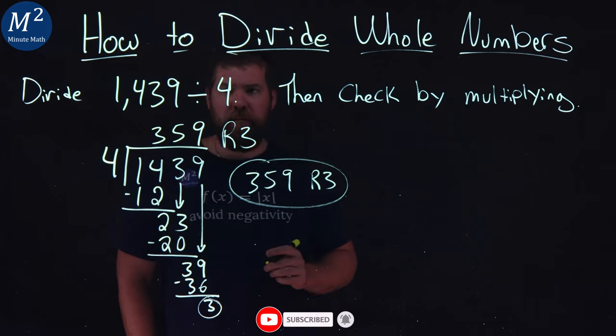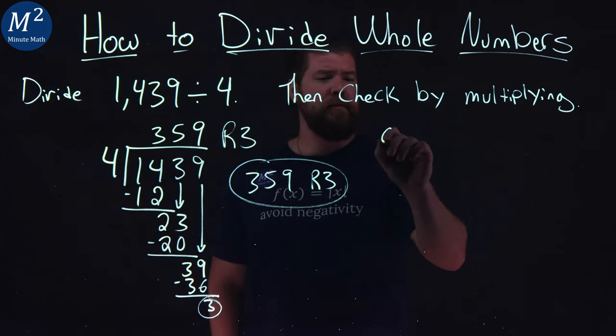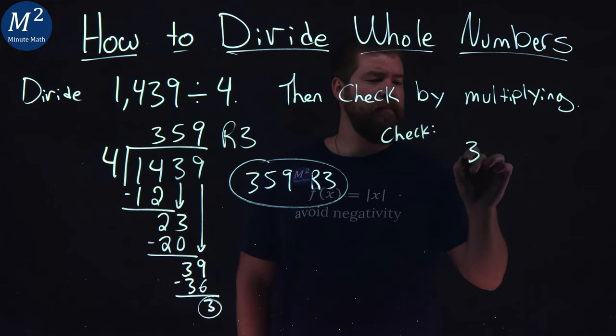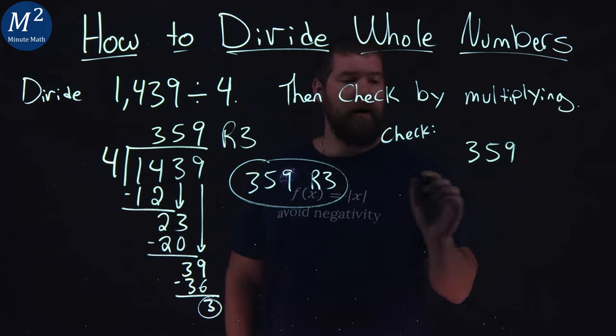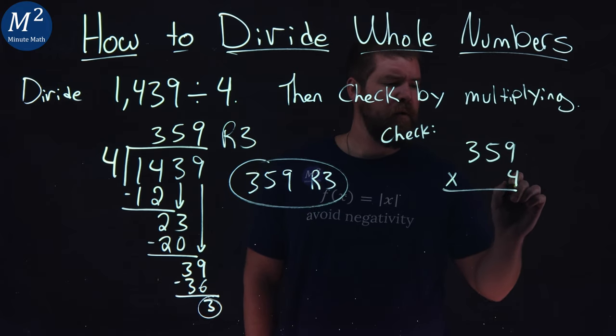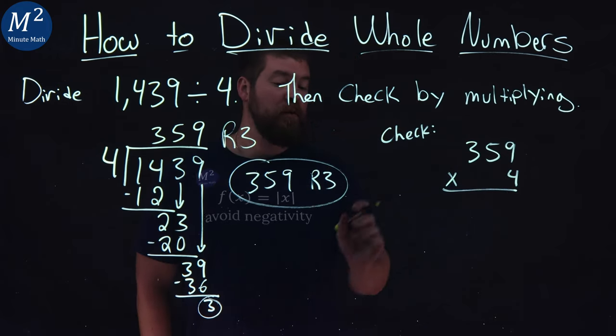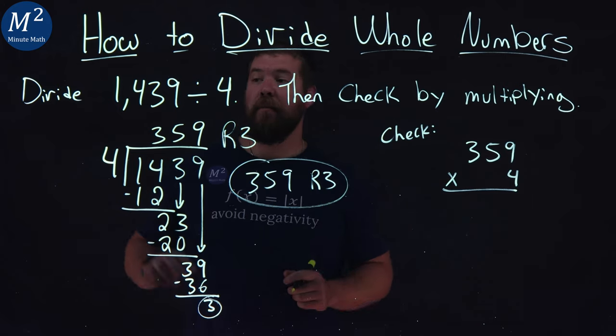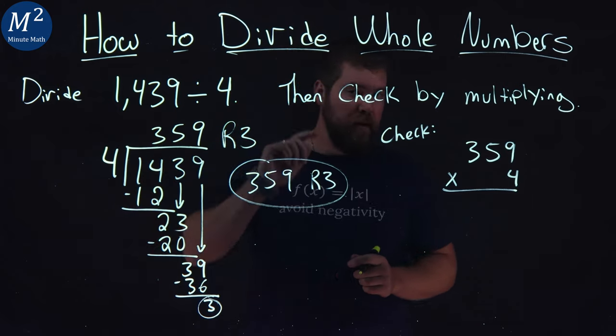But we can still check with multiplication. We're going to take that 359 and multiply it by 4. Then we add 3 to that result, which was our remainder. If that ends up being 1,439, we did our work right.